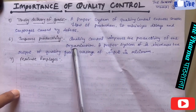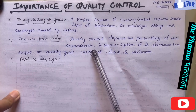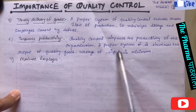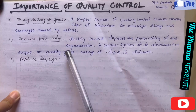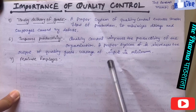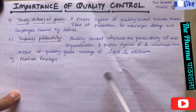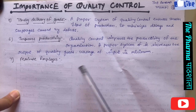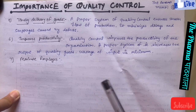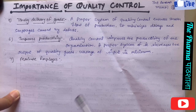Next importance is improved productivity। If we have a good quality control system, it will produce a good quality product and increase the output — that is called improved productivity।